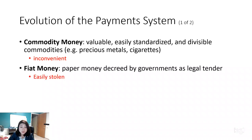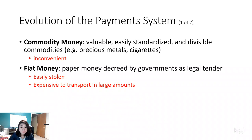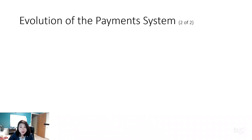What's the problem with fiat money? It's very easy to steal — if your wallet is stolen, the money becomes the thief's money and you have no way to block them from using it. It's also very expensive to transport in large amounts. You see armored cars transporting US dollars to banks — although one piece of fiat money isn't that heavy, when piled together it's still quite heavy to carry.